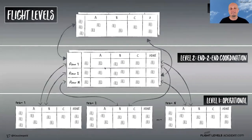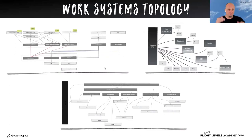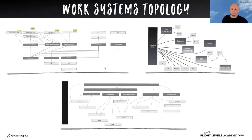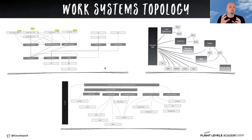If we do something like this in real life, it looks more like what I'm showing now. I've never seen just one flight level three, one flight level two, and one flight level one — that's something we call a work systems topology. This is just some examples from workshops we run across this planet. In real life, it looks a little bit different from the theoretical picture.